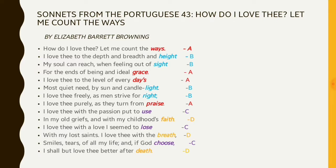Now look at the sestet. The first line of the sestet ends with use, and it's a new sound, so it gets the new alphabet C. The next line ends with faith — again it's a new sound, so we have to assign it with a new alphabet D. The next line ends with lose and it rhymes with use, so we can assign it with C. And the next line ends with breathe which rhymes with faith. And the next line ends with choose, and it rhymes with lose and use, so we can assign C. And the last line ends with death, so we can assign D for this line.